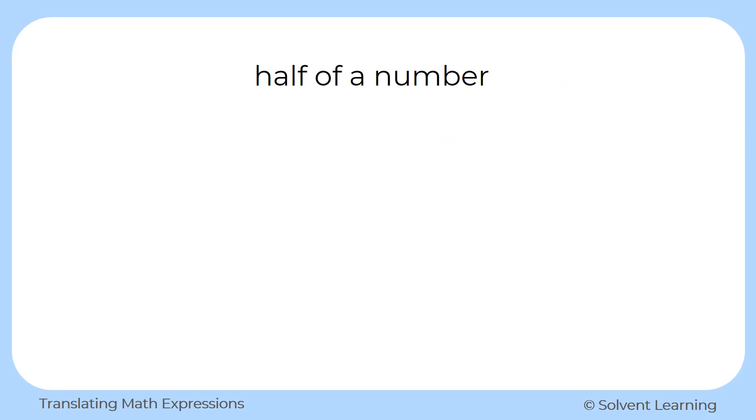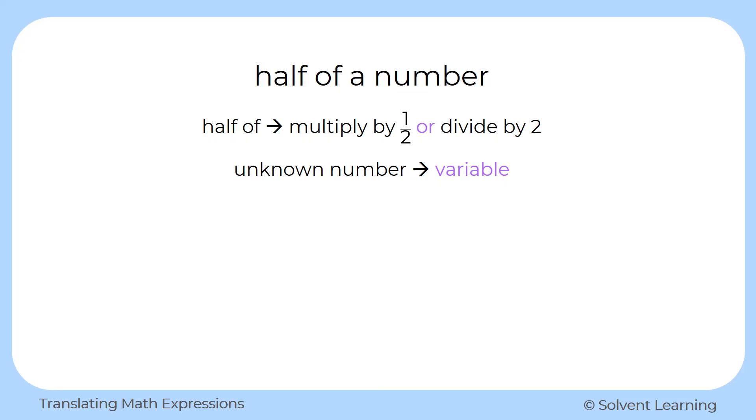And lastly, we have half of a number. Now, half of can be represented two different ways. We can either multiply by one half or divide by two. And we also have an unknown number that we'll represent with a variable. So I can represent half of a number as multiplying one half times our variable, which I used y for this example. Or I can show that I'm dividing by two and represent it as y divided by two. And here I set it up as a fraction to show that division. Either way represents the same value, so both ways are perfectly fine.